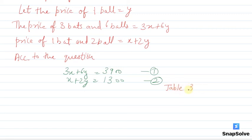For the equation 3x plus 6y equals 3900, we have x and y. If we solve for y, it becomes (3900 minus 3x) divided by 6. So if x is 0, our value will be 650.